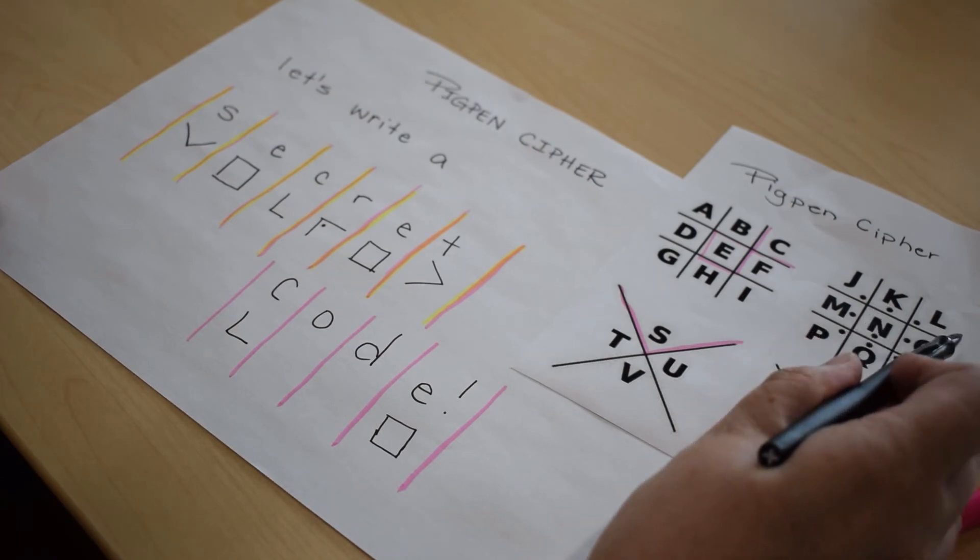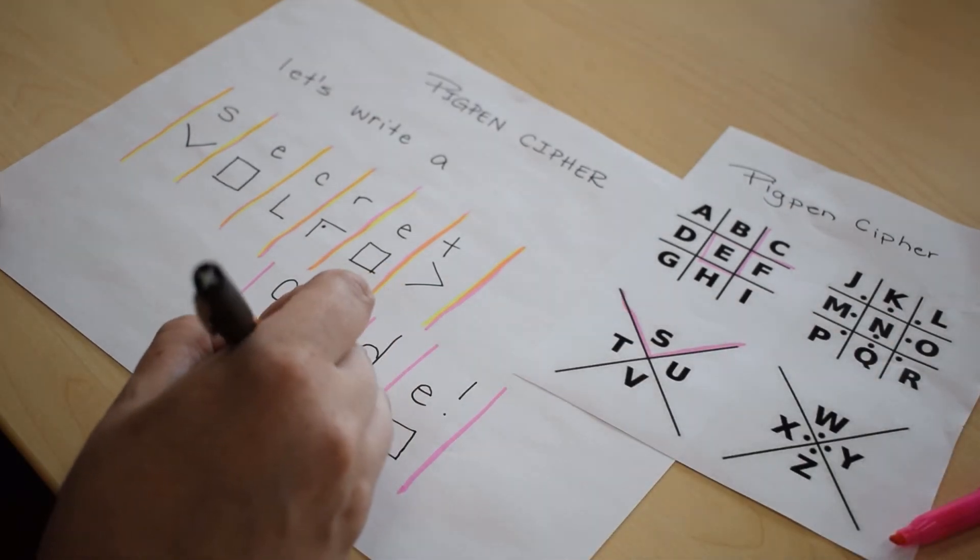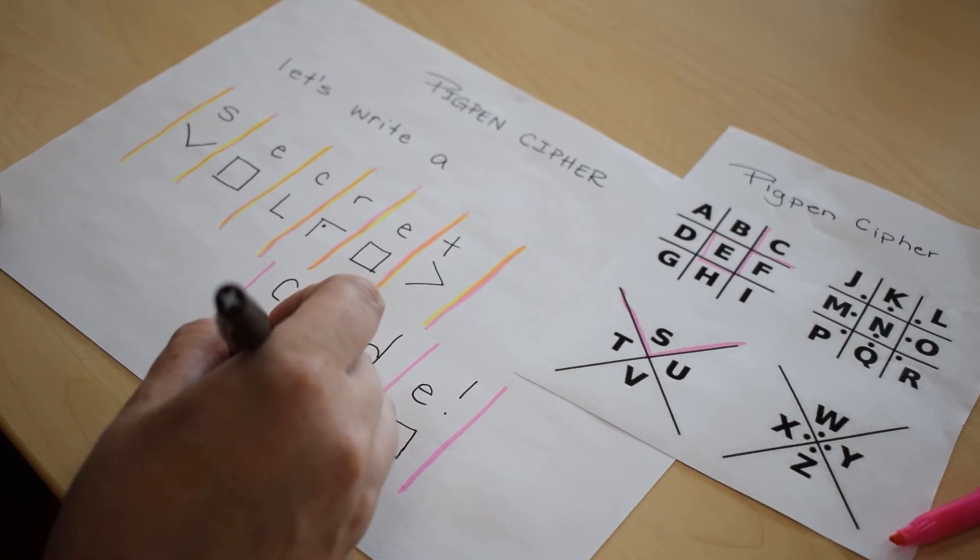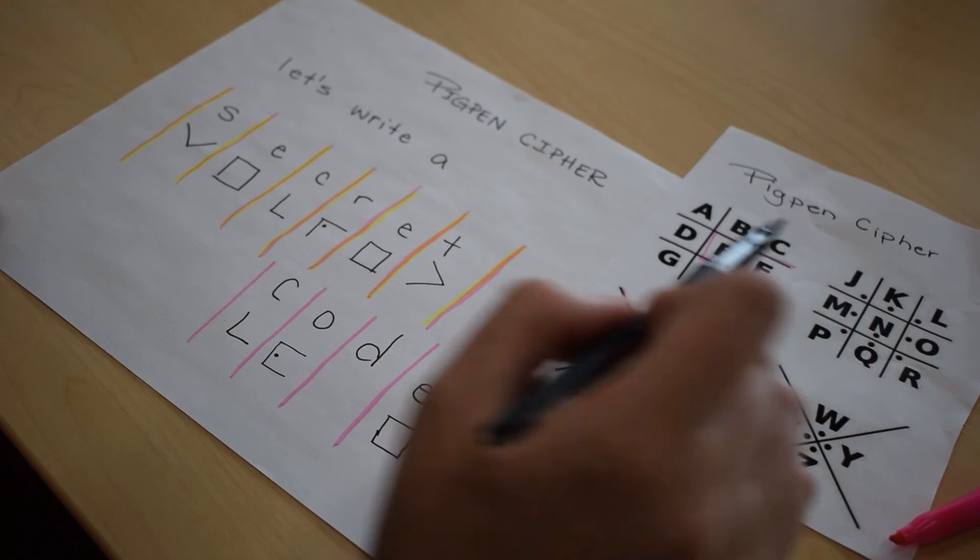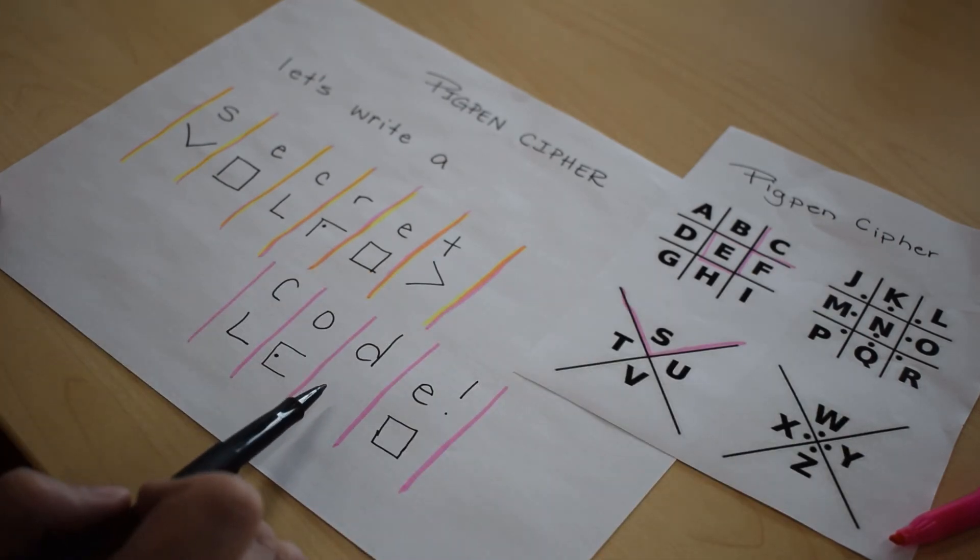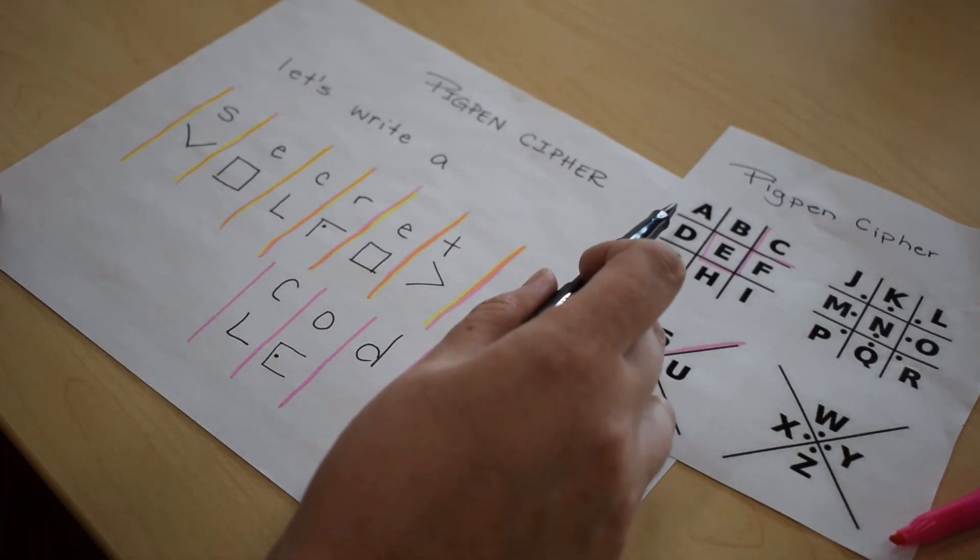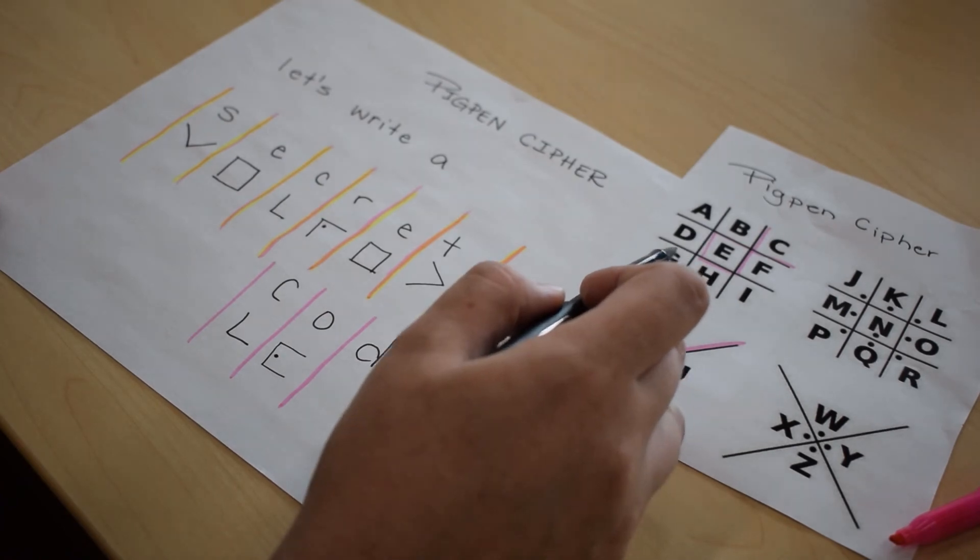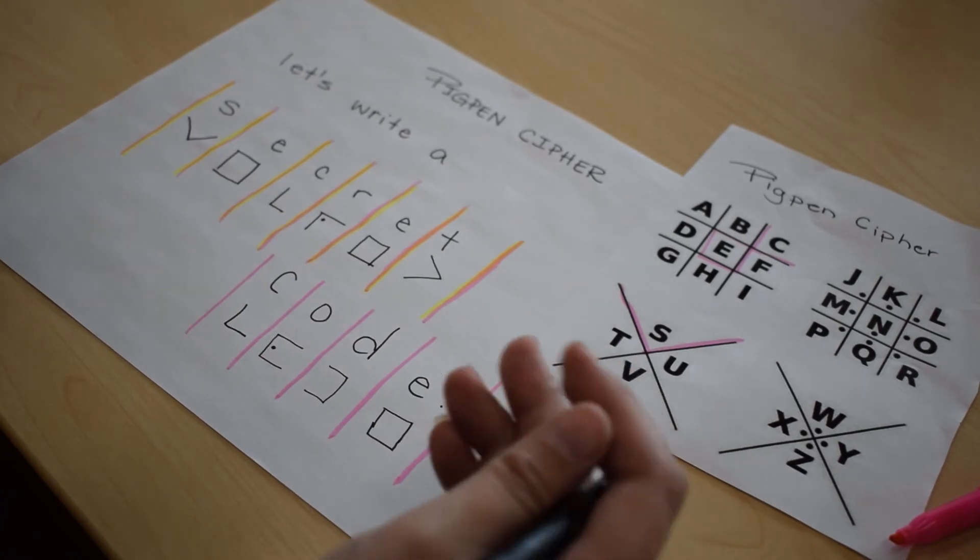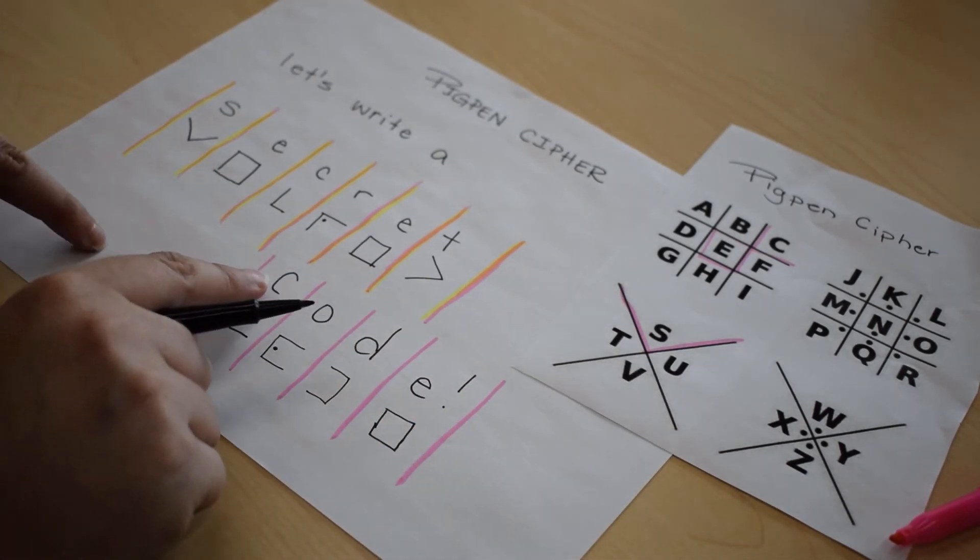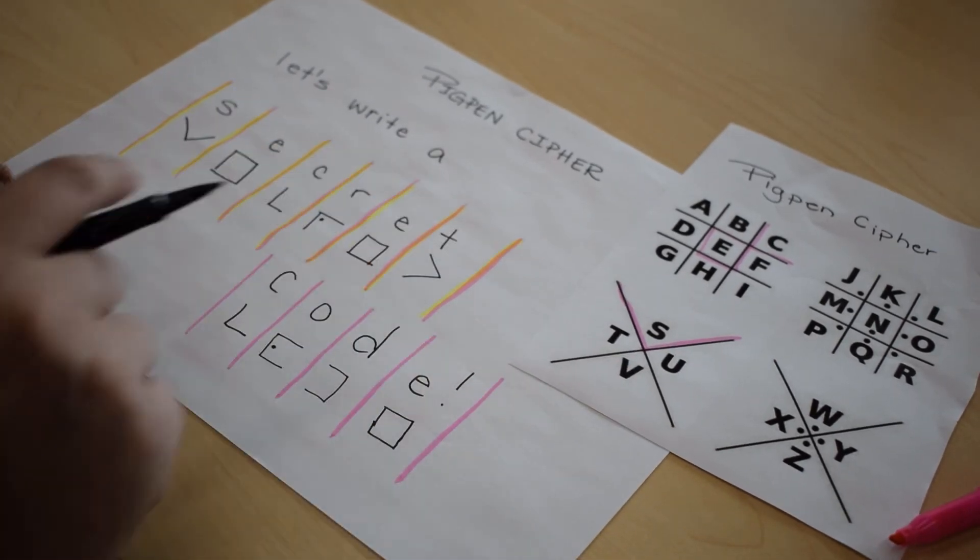So bottom, left, top, and a dot in the middle. Because if we didn't do the dot, it might be an F. And D, our last one here that we haven't done before. So top, right, and bottom. Top, right, and bottom.